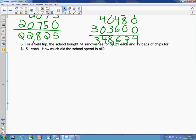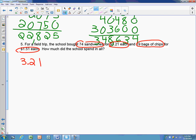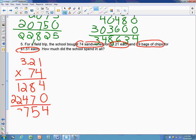Next question is number five. We are now working in a word problem, and we need to circle and underline. For a school trip, the school bought 74 sandwiches at $3.21 each. Then they bought 19 bags of chips for $1.51 each, and they want to know how much the school spent in all. First I have to figure out the sandwiches, which are $3.21. I have to multiply that times 74. And when I do that, I get 23,754. But I have to remember that I jumped twice for the decimal. So I really spent $237.54.